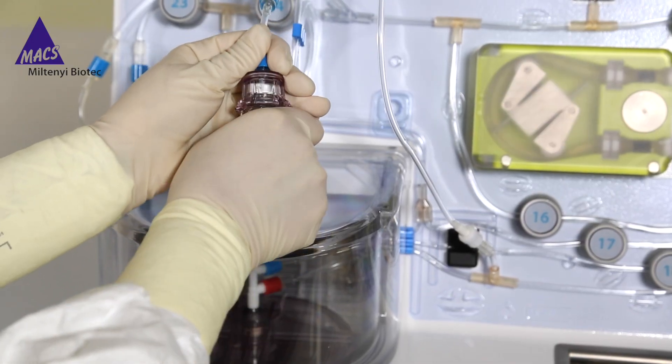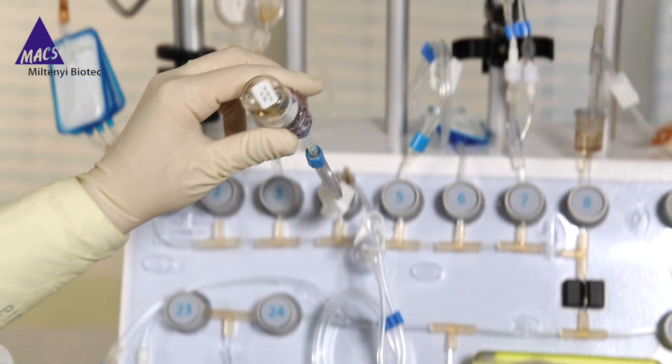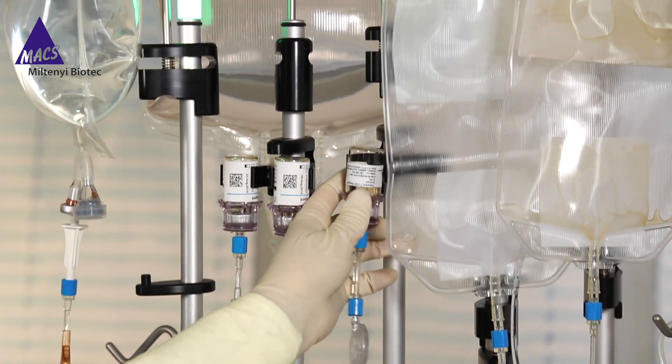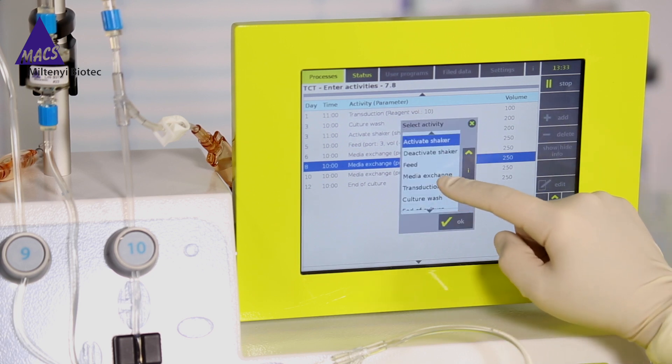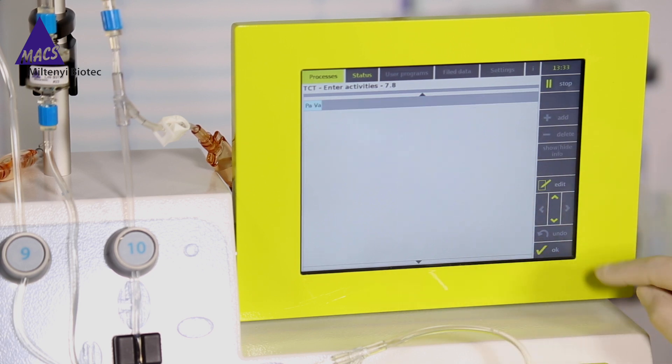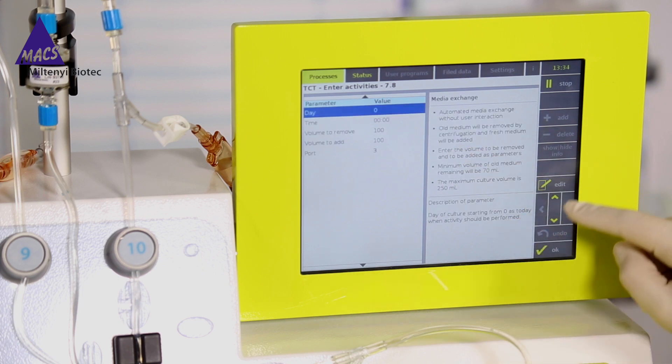Then, the Max GMP T-cell Transact is connected to the system. Using the touch screen, you can adjust details in the cultivation process according to your needs.